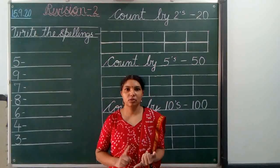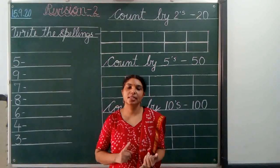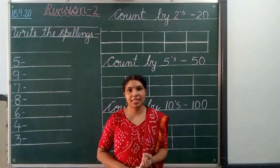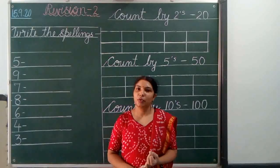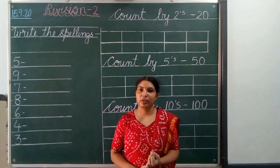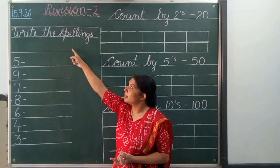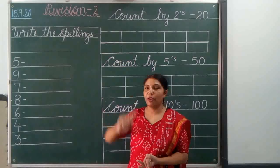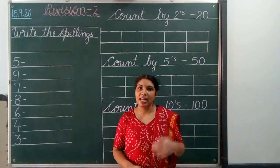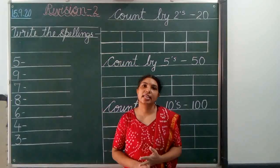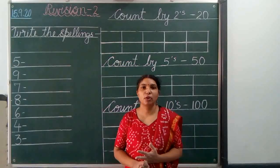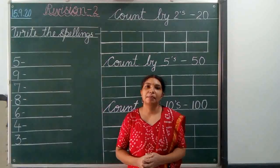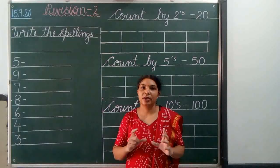Count and write, draw balls, what comes after, what comes between and missing numbers. Today we are going to revise write the spellings and count by 2's, 5's, 10's, and last is table of 2, table of 5 and table of 10. These will come in revision 2.